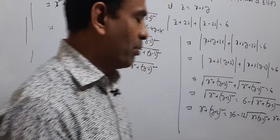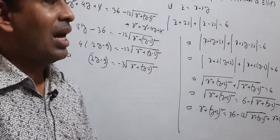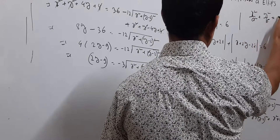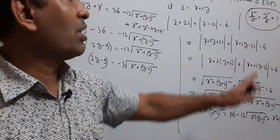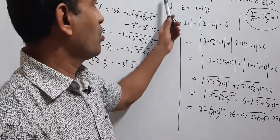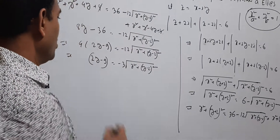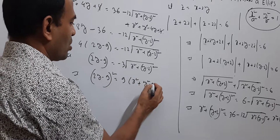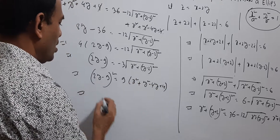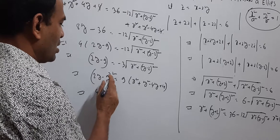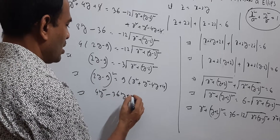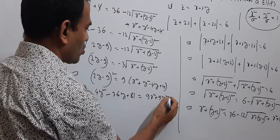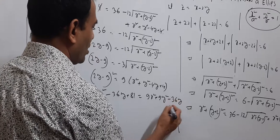Now I will convert this equation to represent an ellipse in standard form x²/a² + y²/b² = 1. Squaring both sides: (2y − 9)² = 9·(x² + (y−2)²). So 4y² − 36y + 81 = 9x² + 9y² − 36y + 36.